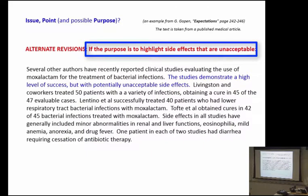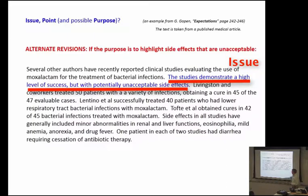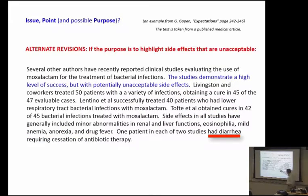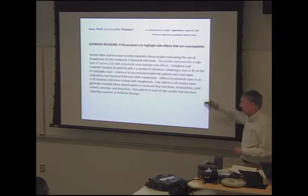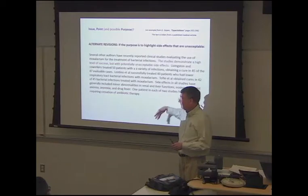On the other hand, if the purpose is to highlight side effects that are unacceptable, then we insert: 'The studies demonstrate a high level of success, but with potentially unacceptable side effects.' That becomes our issue. Then read through the rest of the paragraph — here's success, here's success, we get to side effects, and we end with side effects including diarrhea and cessation of therapy. We don't need to say it again — here's our issue endpoint. Notice it's exactly the same paragraph content, and you can get readers to take away really different perceptions, even though the content is the same.